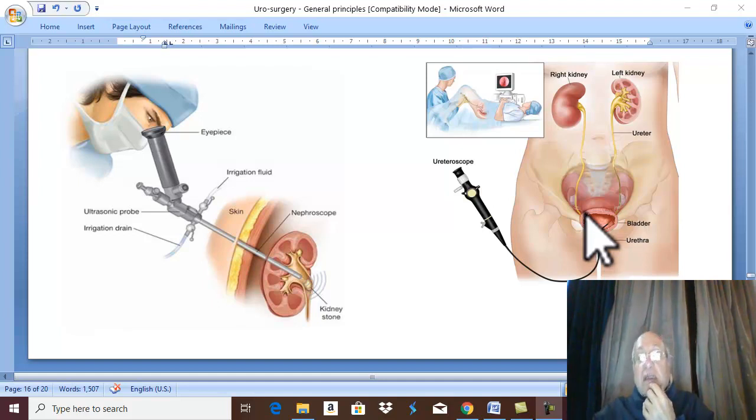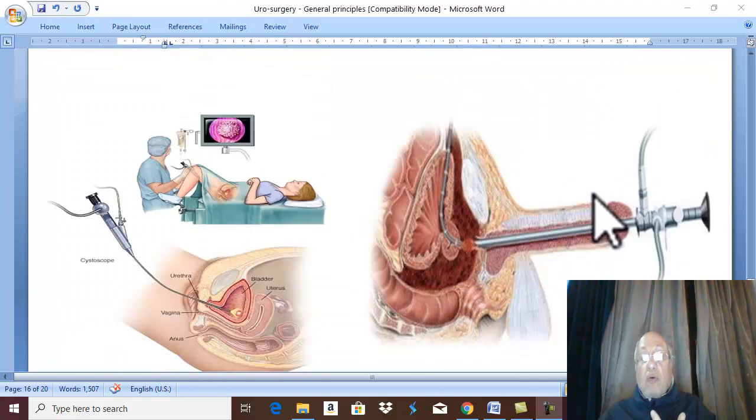If conservative treatment fails, small uncomplicated stone but medical treatment and conservative treatment fails, instrumental treatment is the solution. Instrumental treatment includes, I said before in the investigation, that endoscopes are diagnostic and therapeutic. For example, extraction of the stones through a nephroscope or ureteroscope or ureteroscope. This is instrumental treatment.